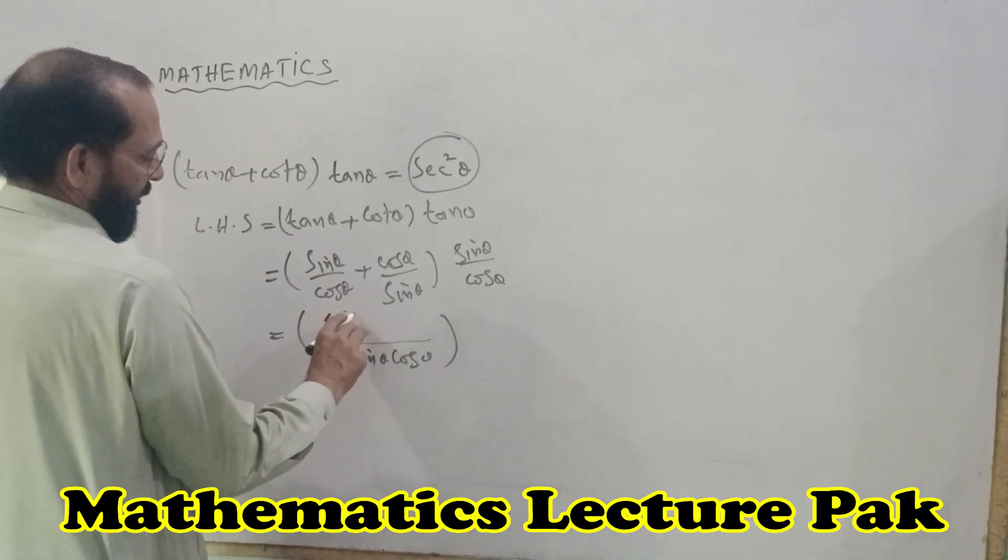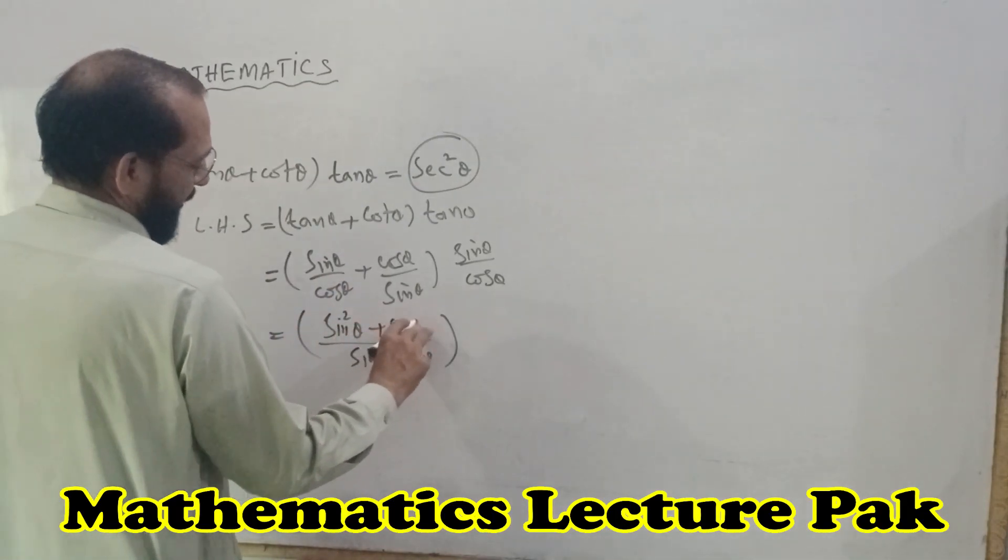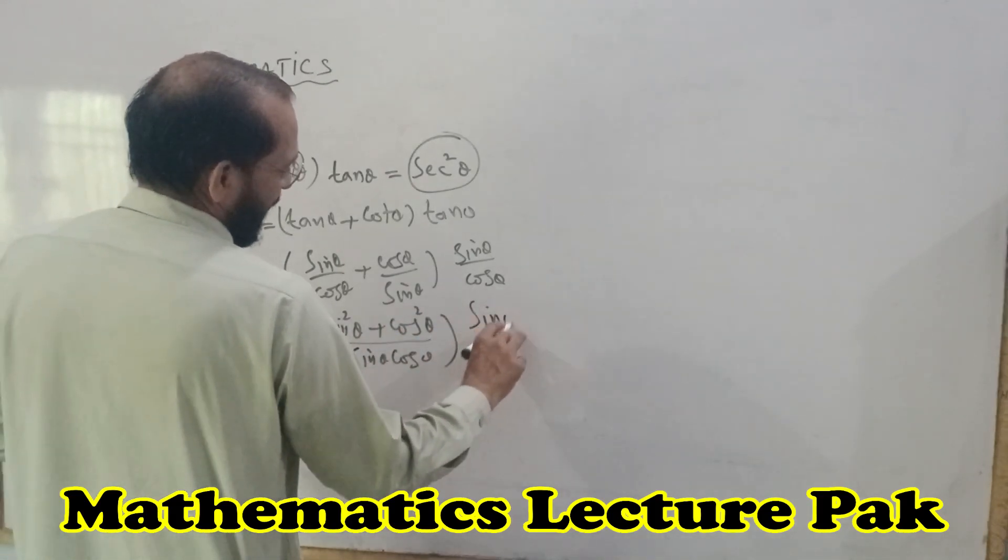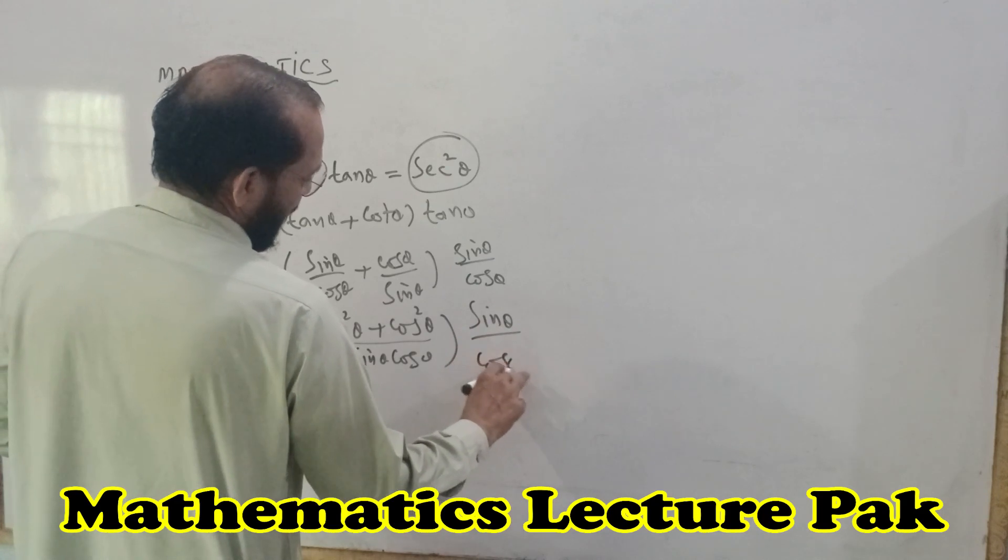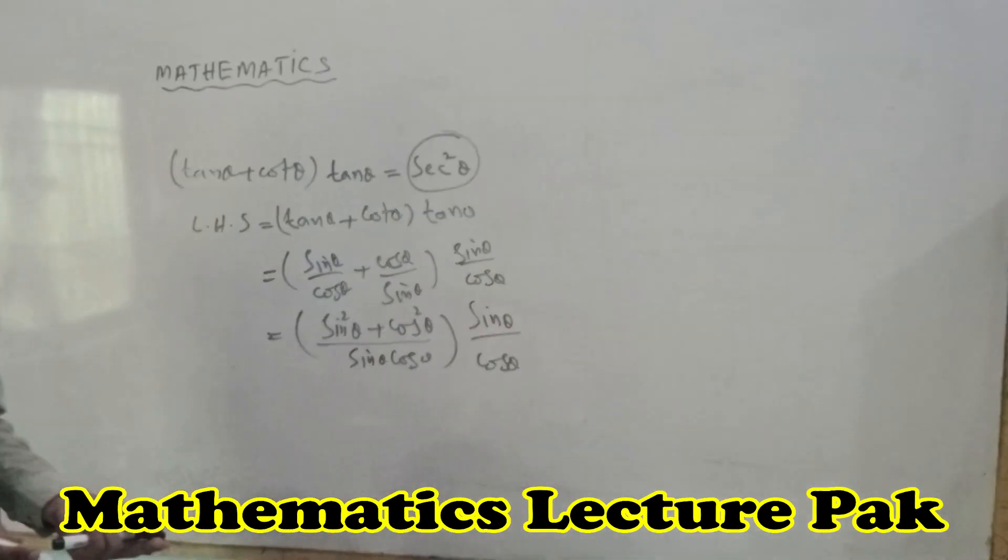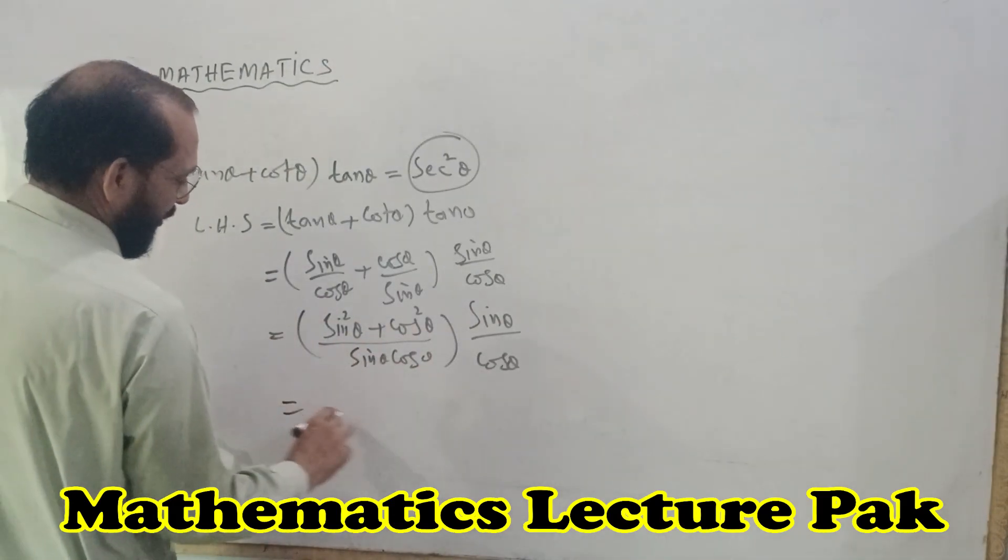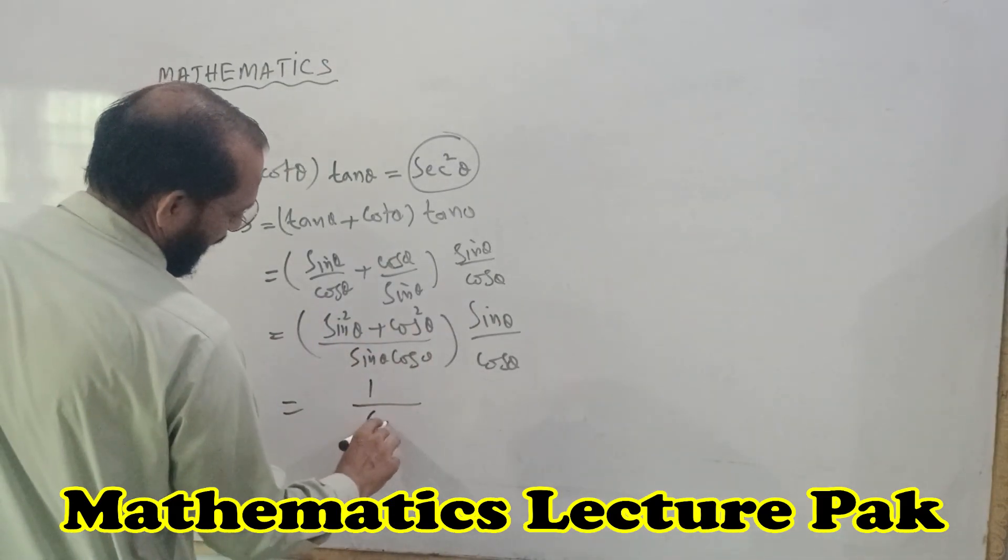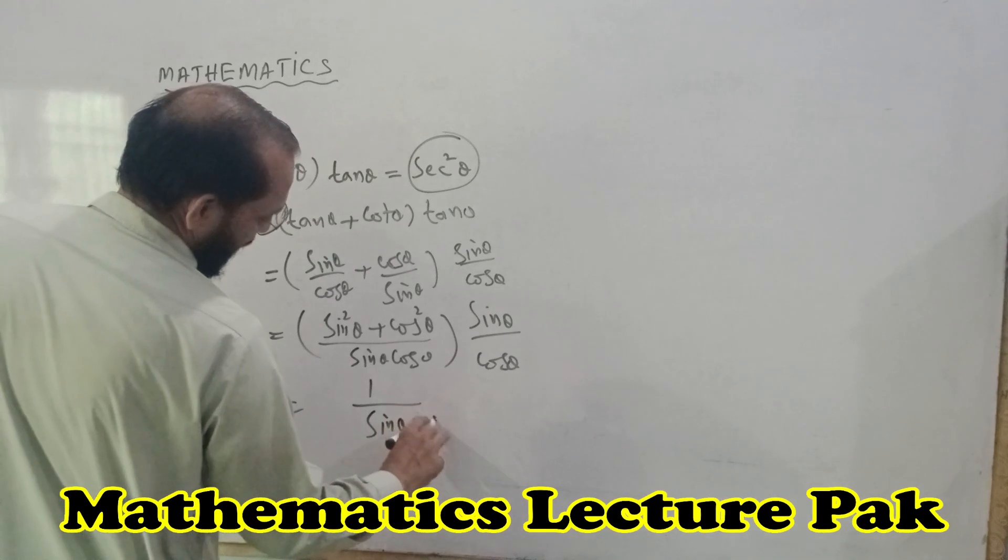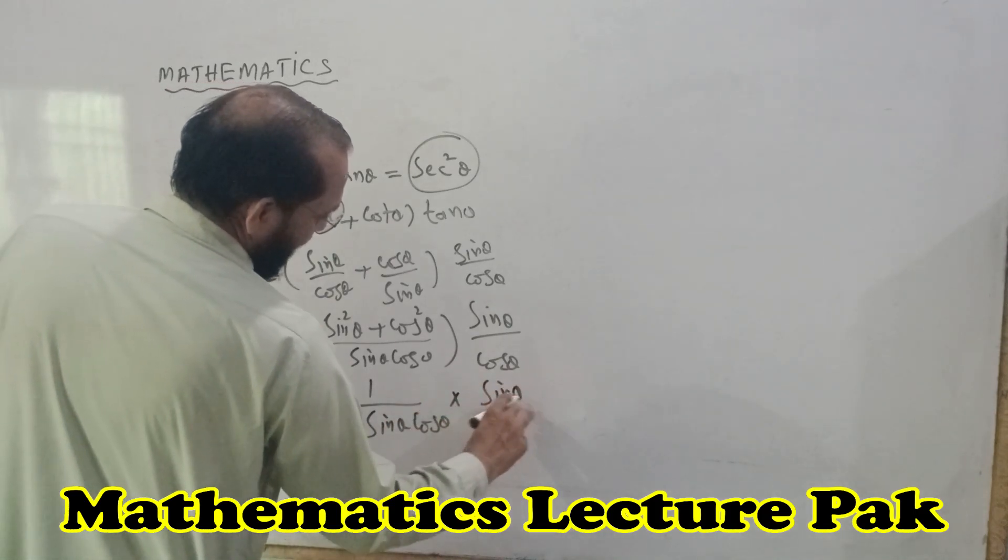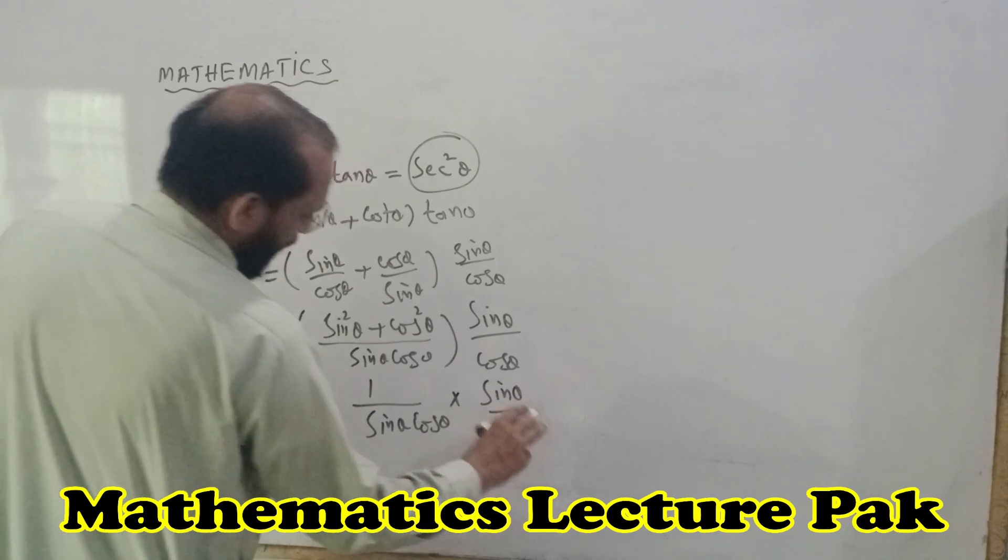This will be sine squared theta plus cosine squared theta over sine theta cosine theta. After simplification we have this, as you know that this is the formula sine squared plus cosine squared which is equal to one.